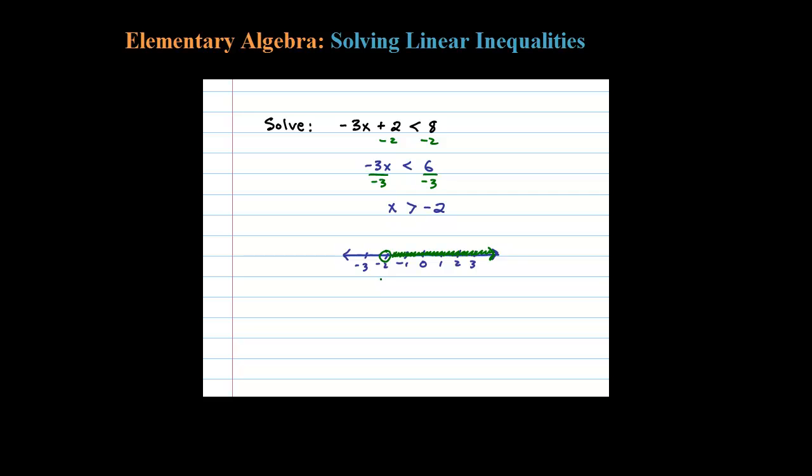Now another way to express infinitely many solutions is to use interval notation. And since negative 2 is not included in interval notation, you use a regular parentheses for that. So from negative 2 out to infinity, this would be the interval notation for this infinite set of real numbers that solves the original inequality.